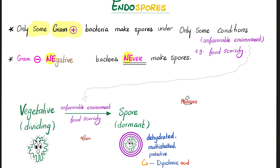Let's review endospores quickly — for a more robust discussion, check the previous video. Endospores are only made by some gram-positive bacteria, only under some circumstances, when the environment is unfavorable. Gram-negatives never make spores. When the environment was favorable, the bacteria was dividing like crazy in the vegetative state — like a plant that grows and multiplies vegetation. The endospore is dehydrated, multi-shelled, protective, and has calcium dipicolinic acid.